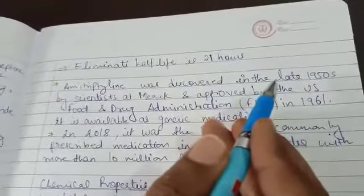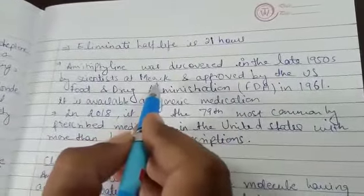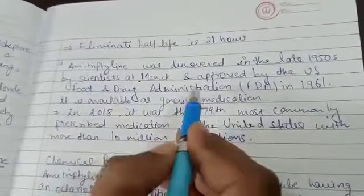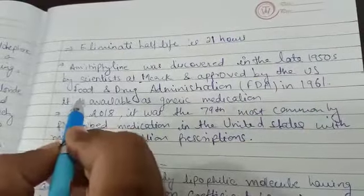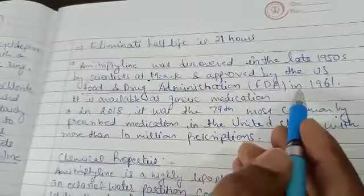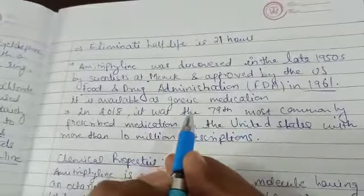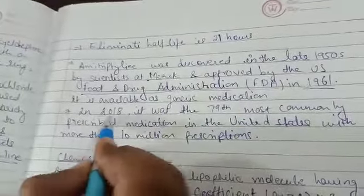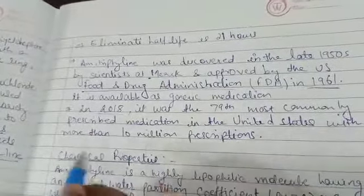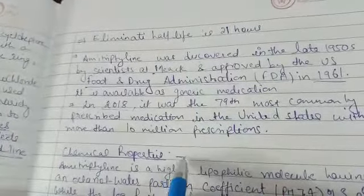It was discovered in the late 1950s by scientists at Merck and approved by the U.S. Food and Drug Administration (FDA) in 1961. It is available as generic medication. In 2018 it was the 79th most commonly prescribed medication in the United States with more than 10 million prescriptions. Now this was your physical properties of amitriptyline.